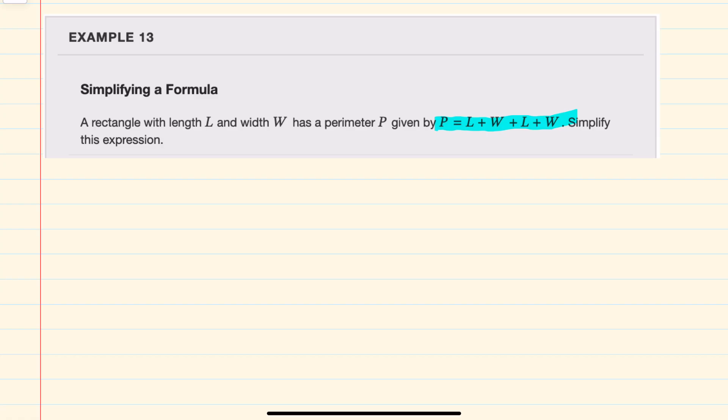And to simplify this expression, I can see that the right-hand side has some like terms that we can add. The left-hand side of the expression is just P for perimeter, and on the right-hand side,